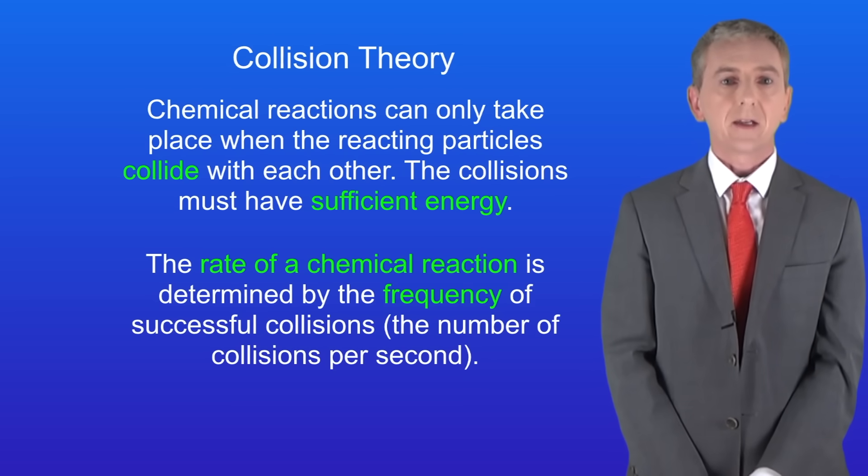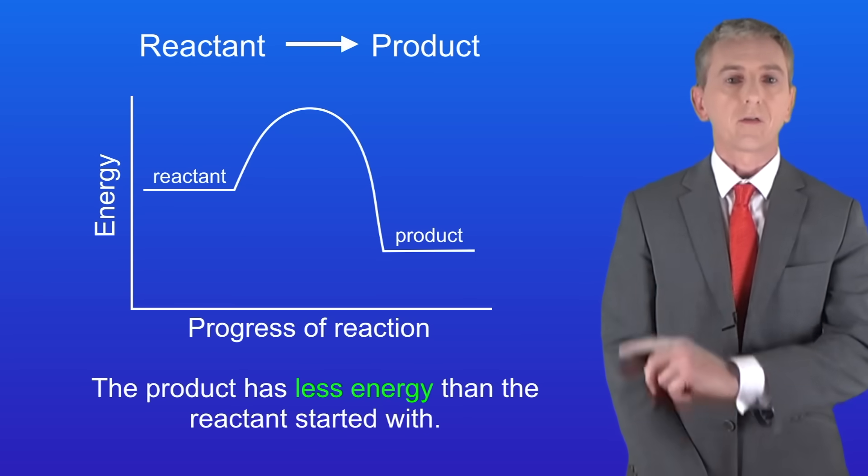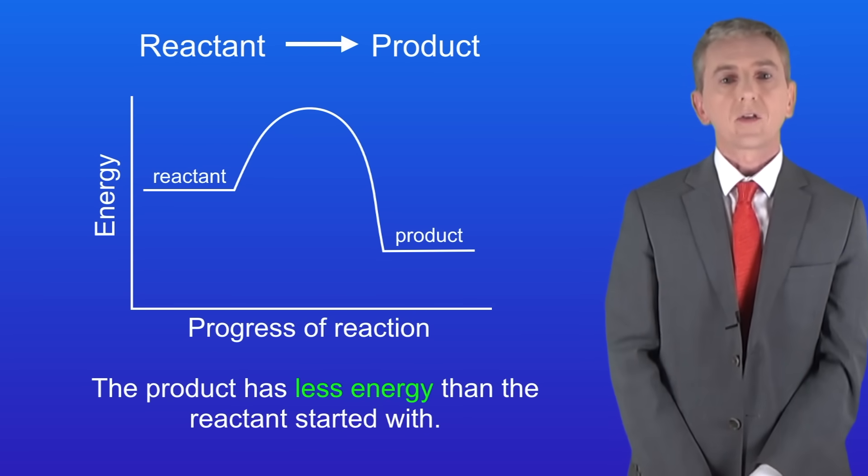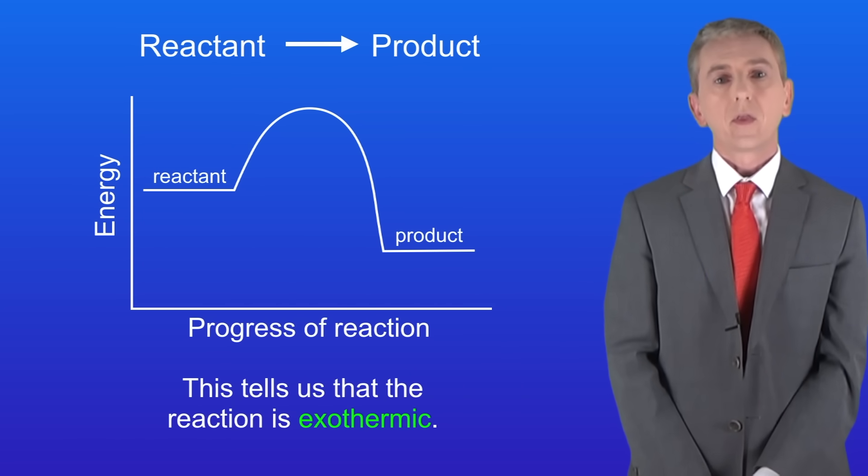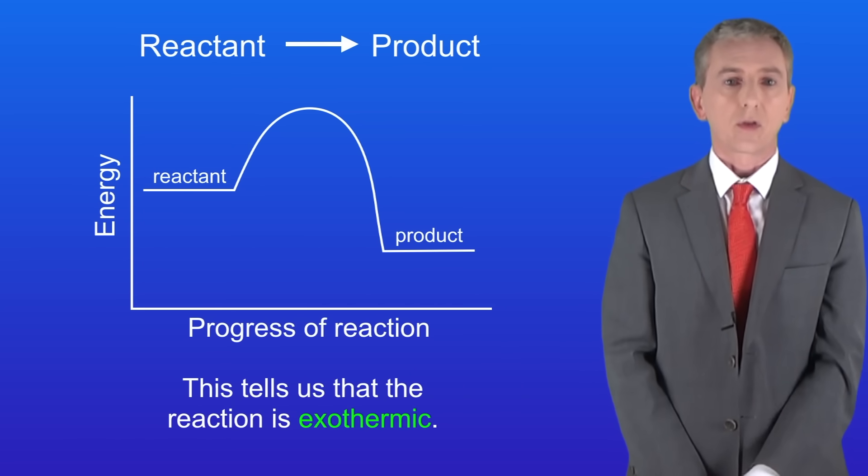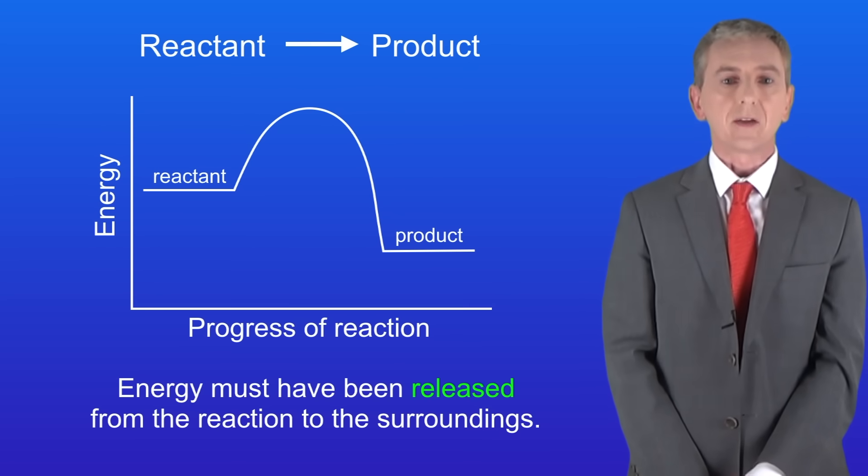In a previous video we looked at energy in chemical reactions. I'm showing you here the energy profile for a reaction. As you can see, the product has less energy than the reactant started with. This tells us that the reaction is exothermic. That's because energy must have been released from the reaction to the surroundings.